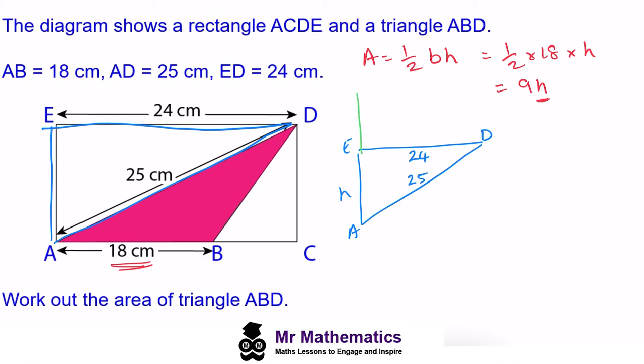Now Pythagoras' theorem tells us the area of the squares on the two shorter sides, so 24 squared and H squared, is equal to the area of the square on the hypotenuse side, which is 25 squared. We can write this as an equation: H squared plus 24 squared equals 25 squared.